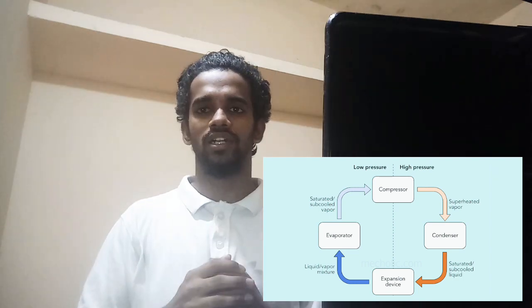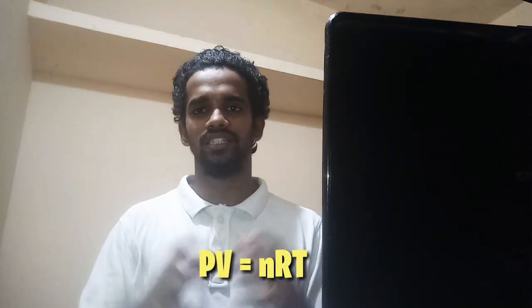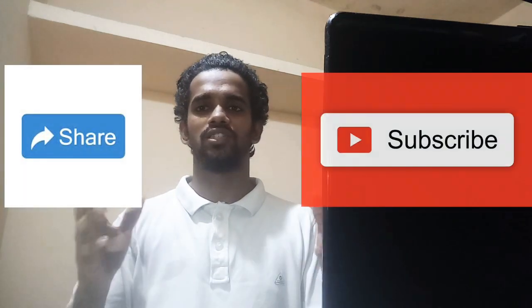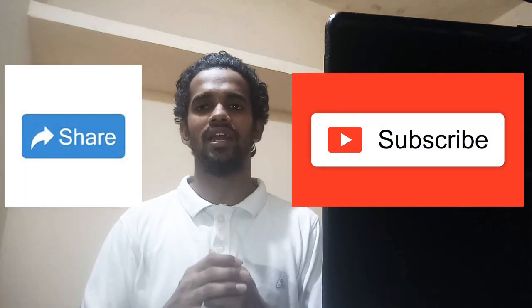I hope you understood the flow of the refrigerant, how the refrigerant is being pressurized and depressurized, and how the ideal gas equation PV = nRT is connected with the refrigerant cycle. I hope you understood how the refrigerant flows from the high pressure side to the low pressure side, how liquid boils off, how it is condensed, and how the refrigerant cycle works. If you find this video useful, share it with your friends and press the subscribe button and bell icon for future notifications. Thank you and have a nice day.